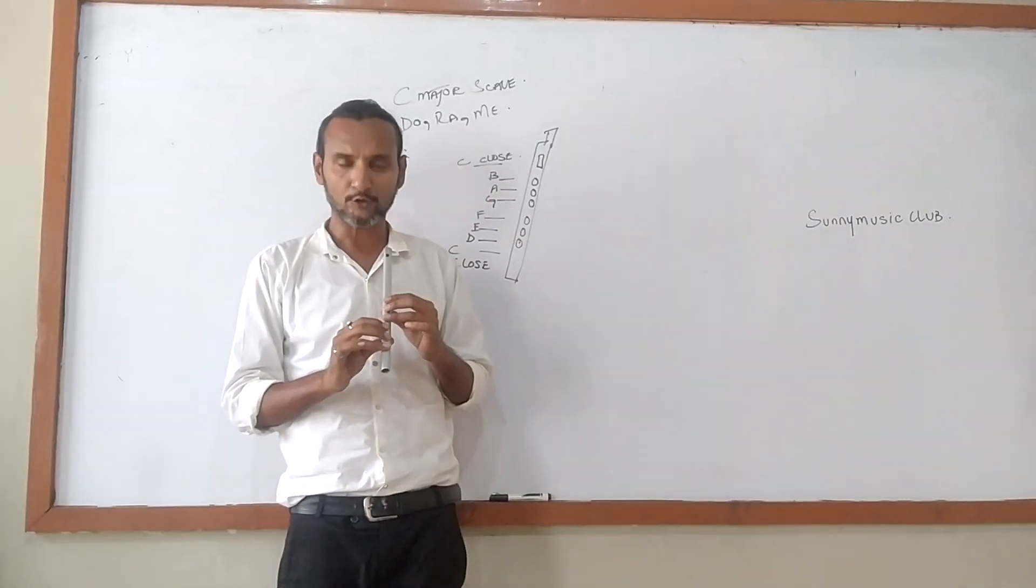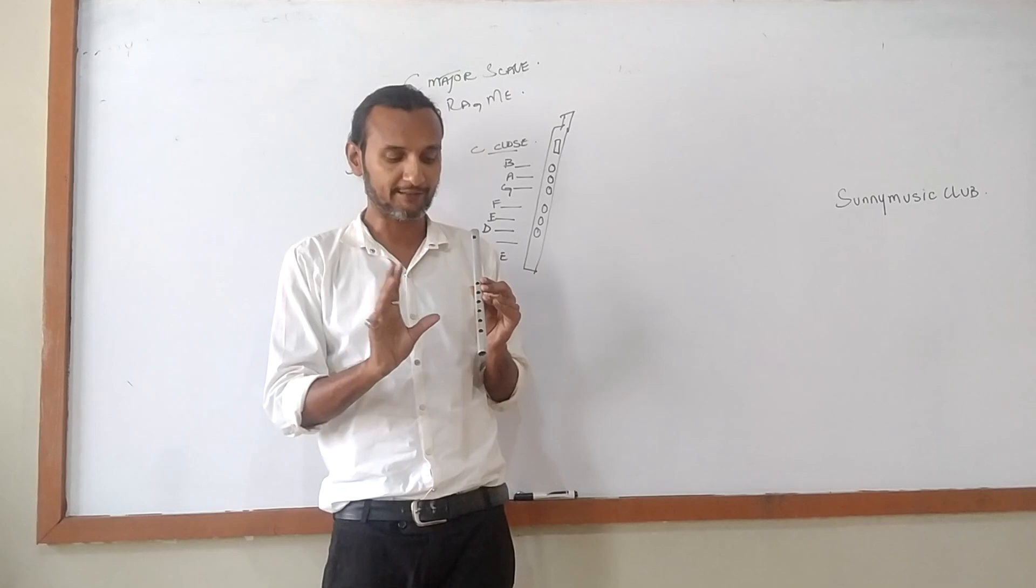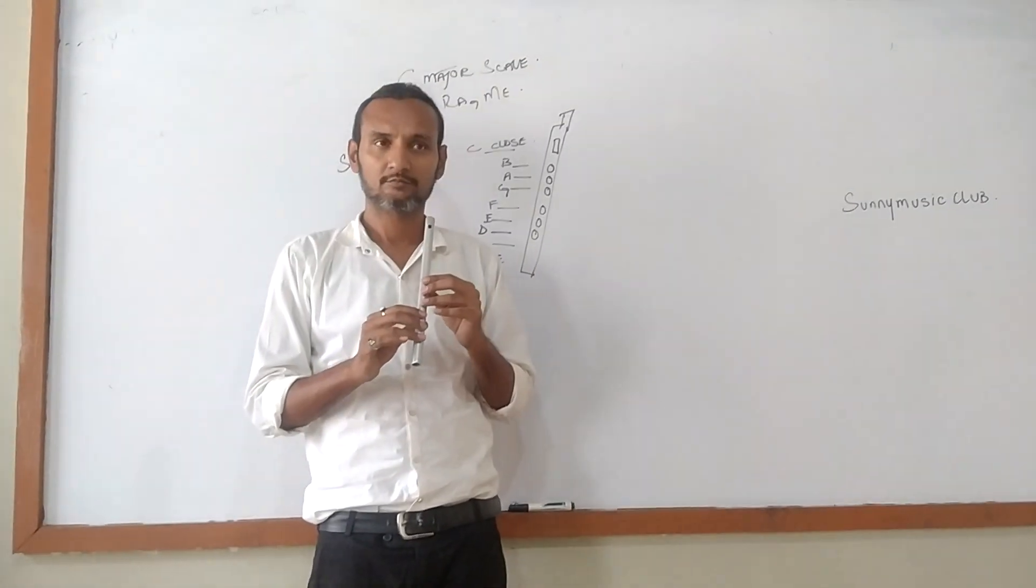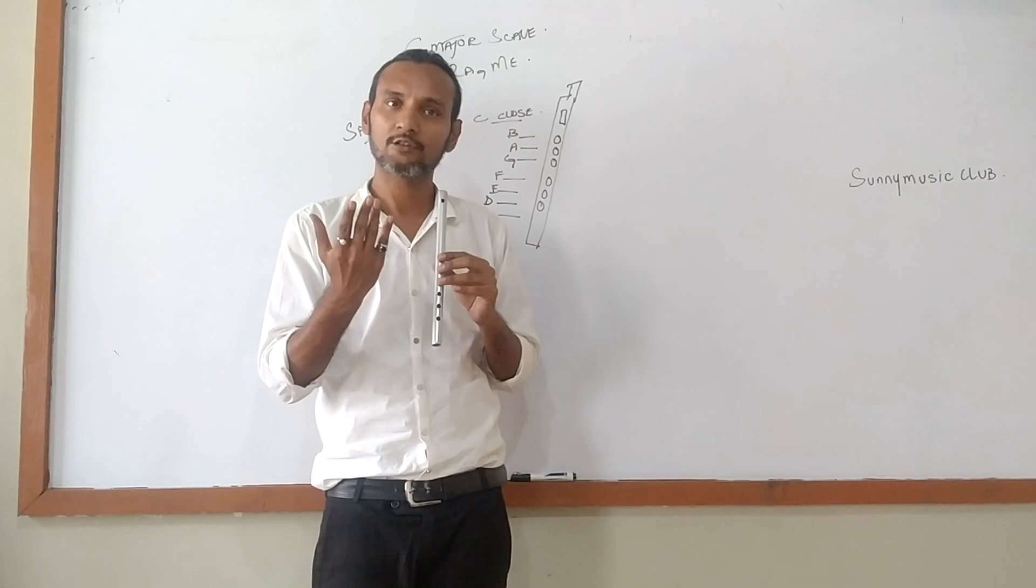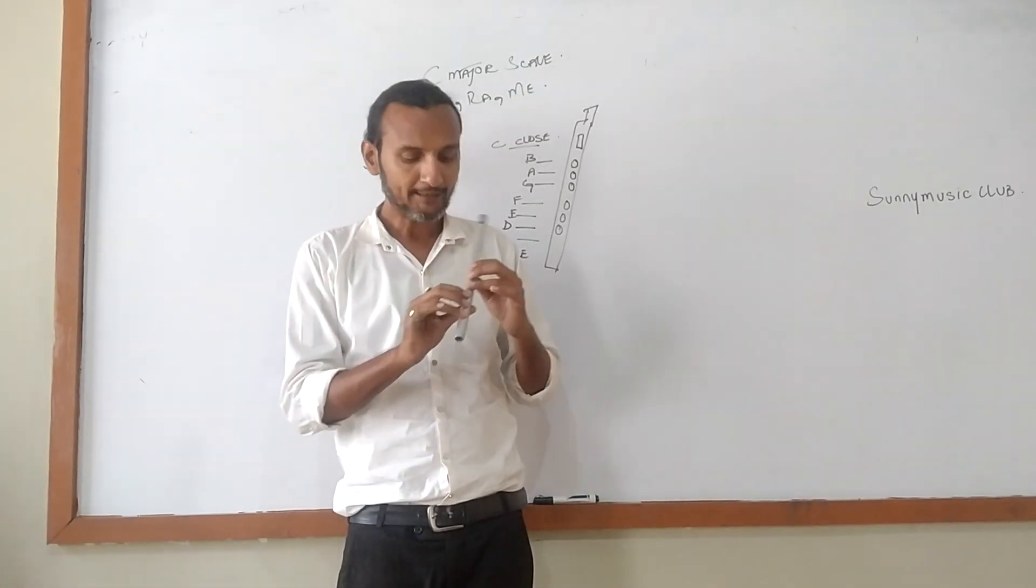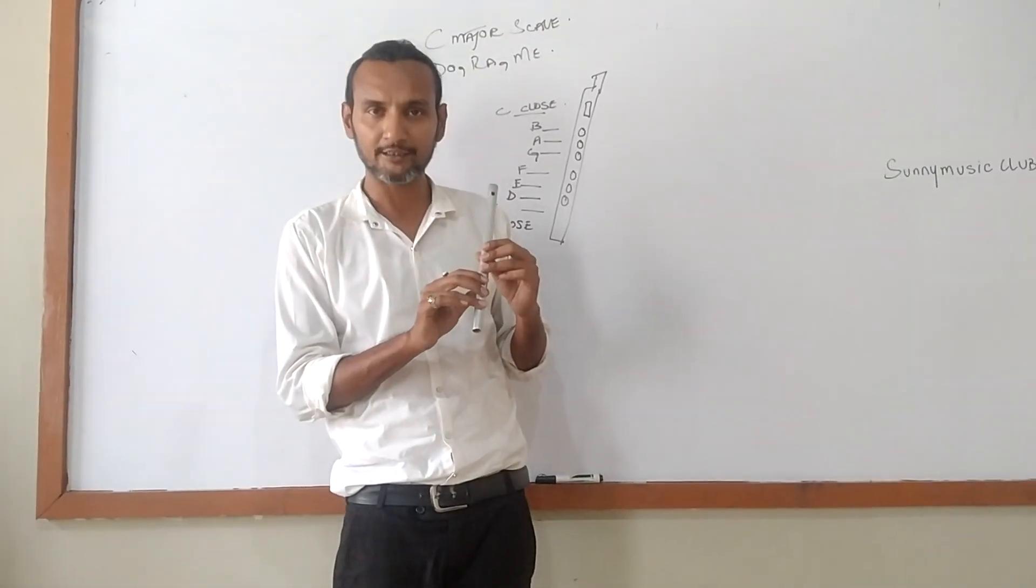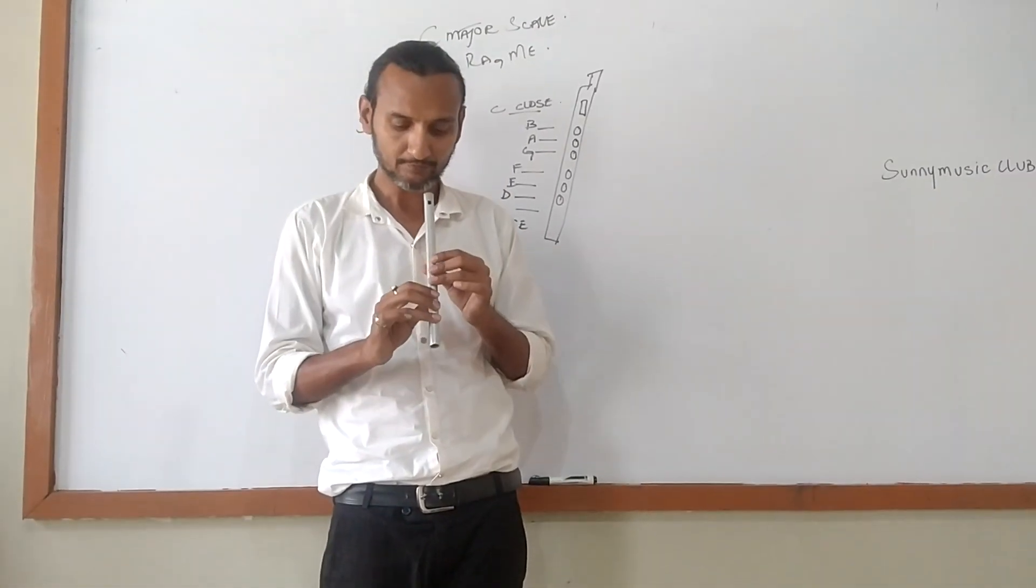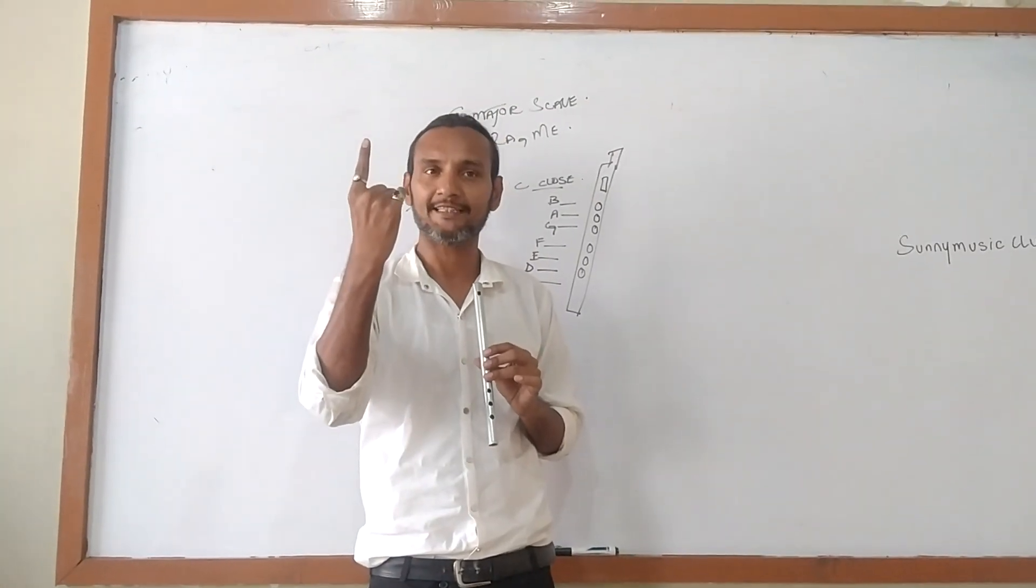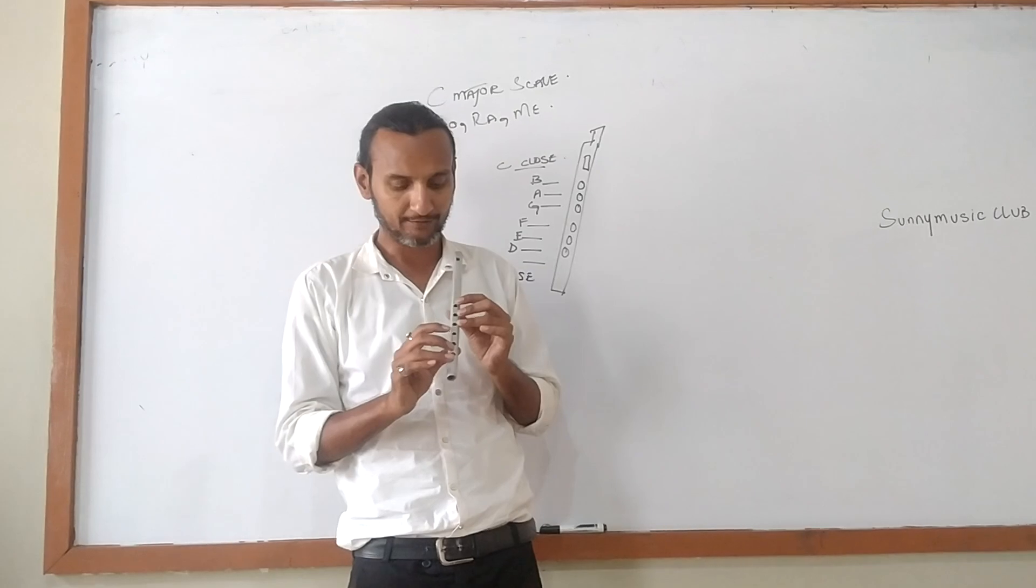Now children, the simple matter, to play this flute. It's not difficult, it's very simple to play. As I told you, this is my C close. Now here are your 6 notes. How many notes are there? Six.